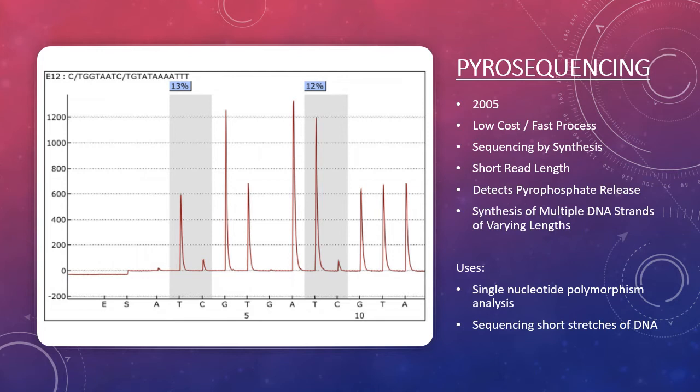This is the second DNA sequencing method that we are going to look at. It was developed in 2005, and it's a fast process compared to Sanger sequencing, and a much lower cost associated with it. It is sequencing by synthesis. It has a short read length. It detects the release of pyrophosphate, and it is synthesis of multiple strands of varying lengths.